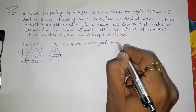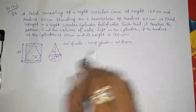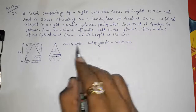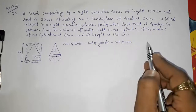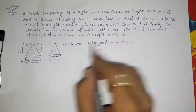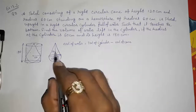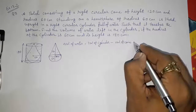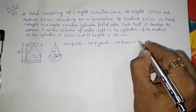minus volume of cone. I am going to do it directly and take out common terms from all three, so I am writing all three together: volume of cylinder, minus volume of cone, minus volume of hemisphere.